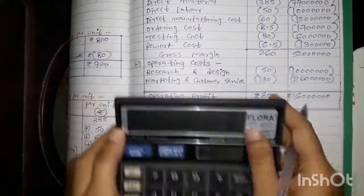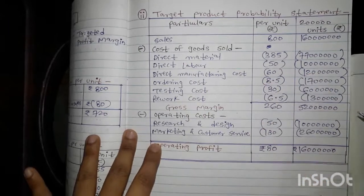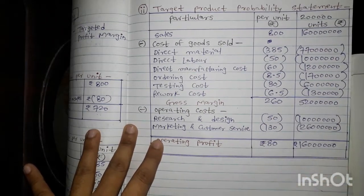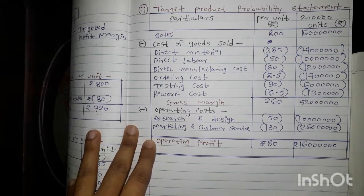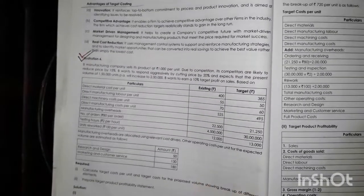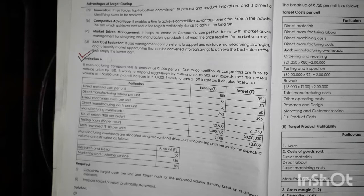So the target product profitability statement is ready and we have answered both questions asked. We have completed Illustration Number 6. If you found this video helpful, please like the video, share with your friends, subscribe to my channel and press the bell icon to get more updates. Please check my channel playlist to get more videos on various topics. Thanks for watching.